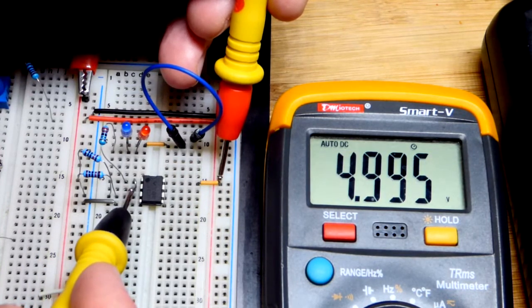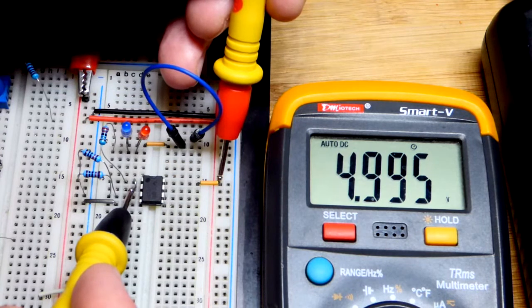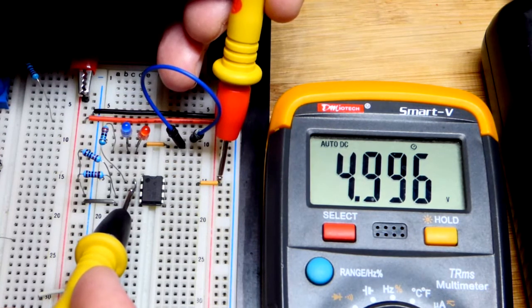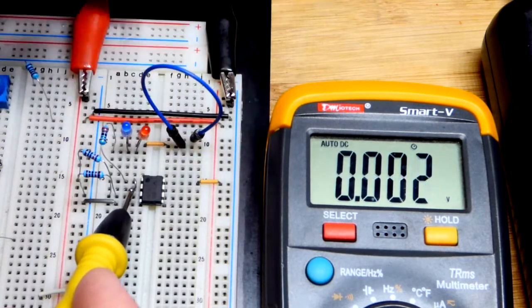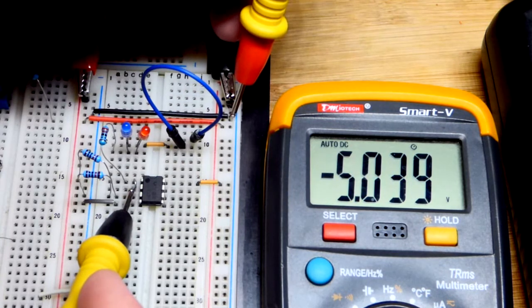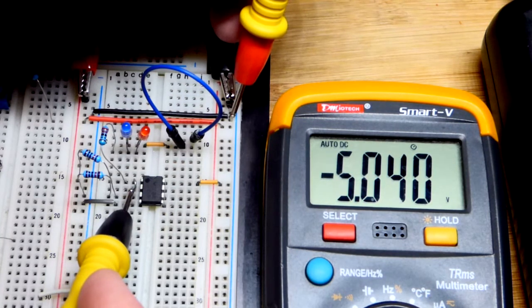Now I'm going to go to the output, which is also where the inverting input is. There's a little jumper that connects them directly together. You can see that the positive supply is five volts higher than our output. If I go anywhere that the negative supply connects, you can see that we got a negative five volts.